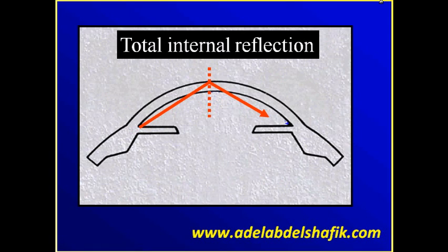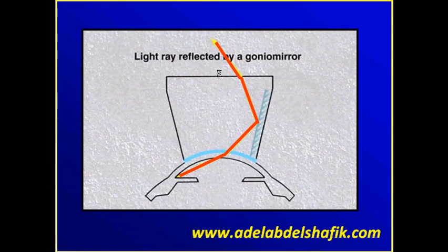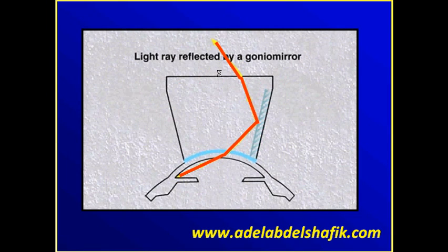Gonioscopes are used to see the angle because of the phenomenon of total internal reflection. Rays coming from the angle cannot find their way outside because the cornea prevents it. When we put a contact lens — this is the gonioscope — we cancel the cornea and then light can find its way to the examiner. So this is the idea of using a contact lens.